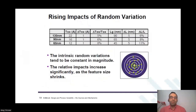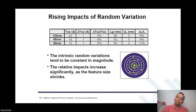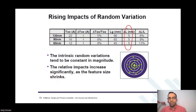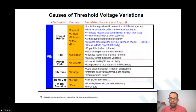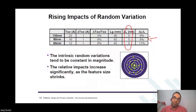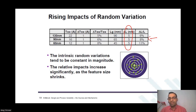This is what we just discussed. Even if the variations remain constant — even if delta L is constant — the impact across technologies is very different. That is why as we go to still more advanced technologies, more and more variations are coming into picture, and they impact memory design very, very significantly.